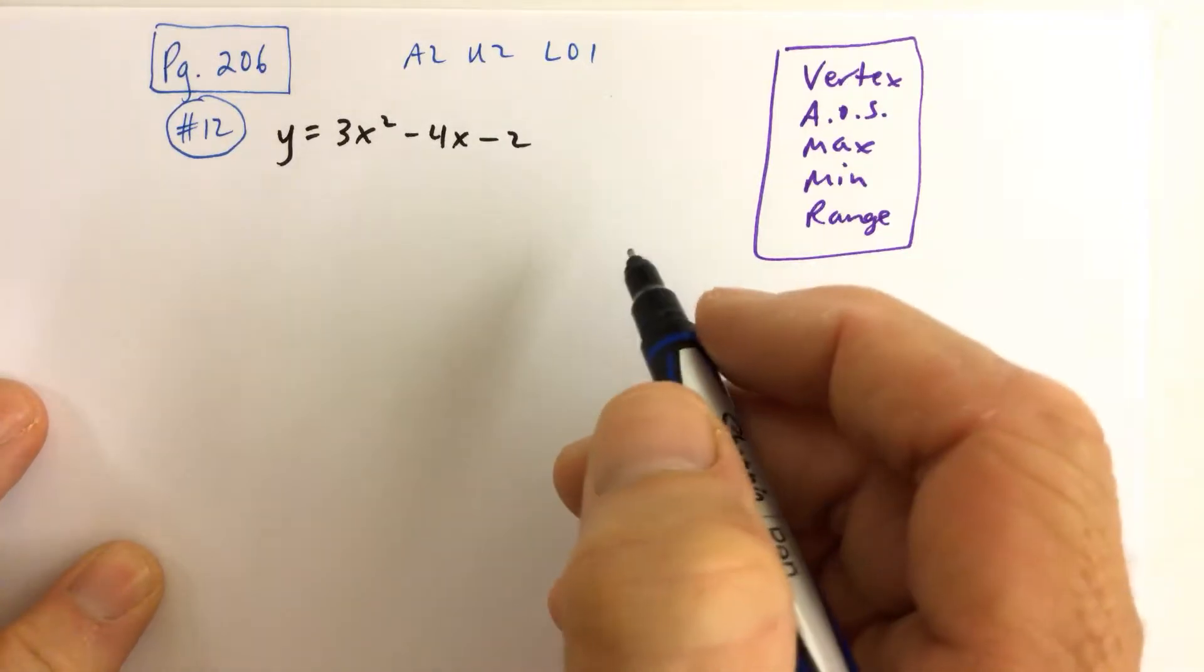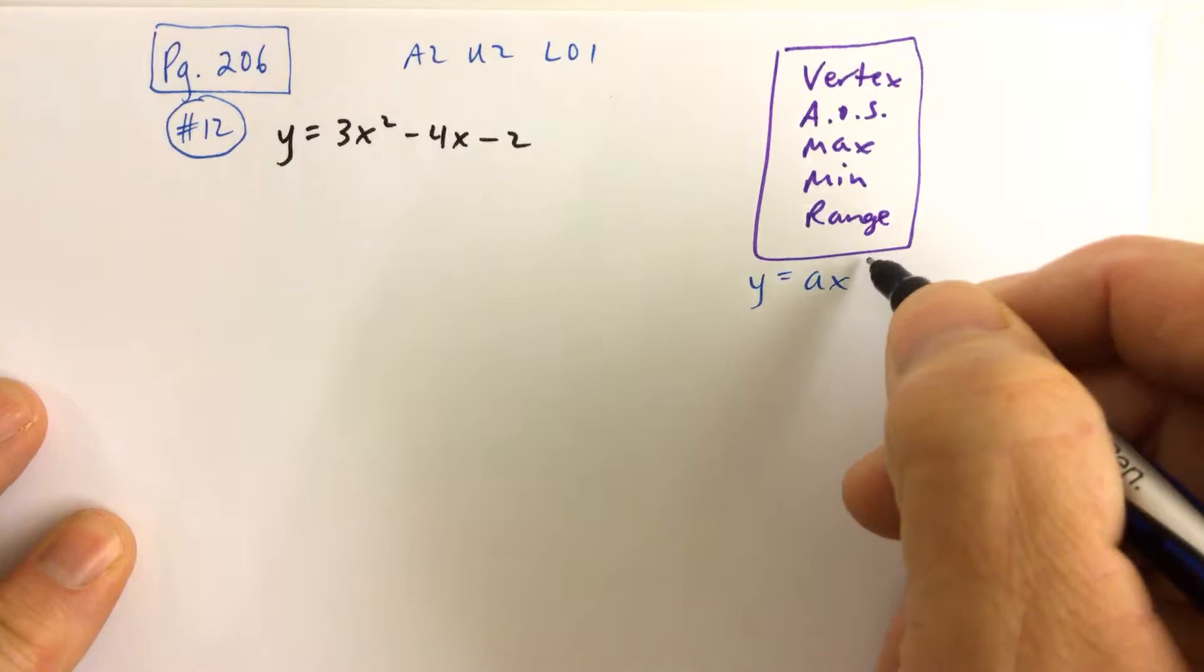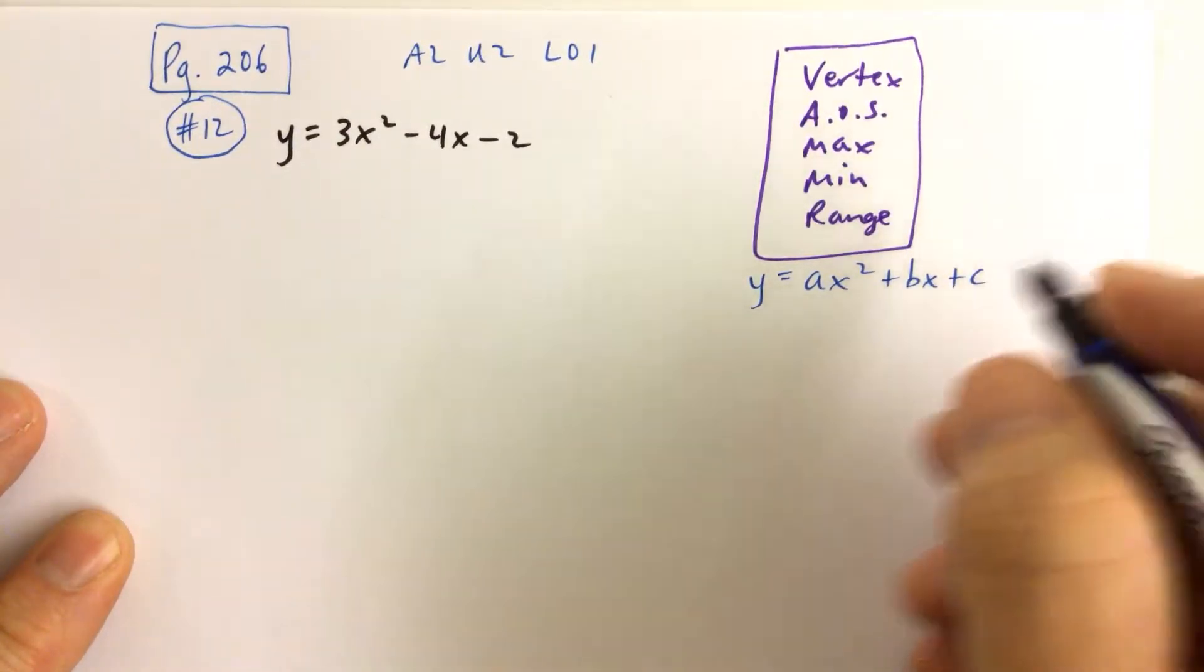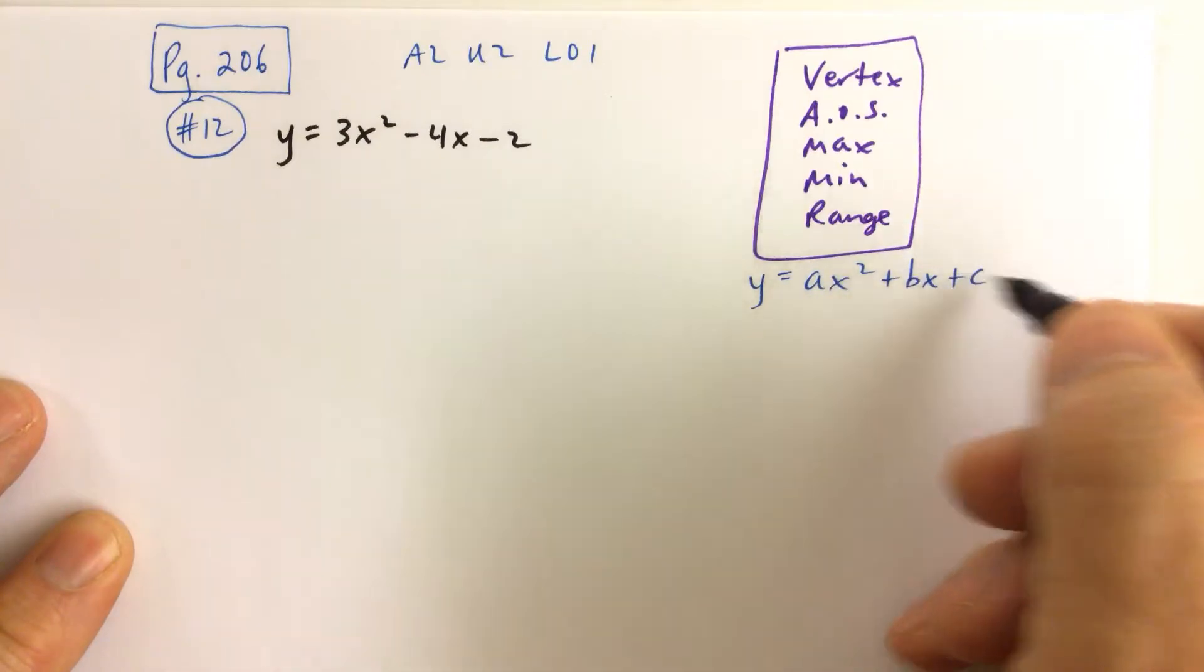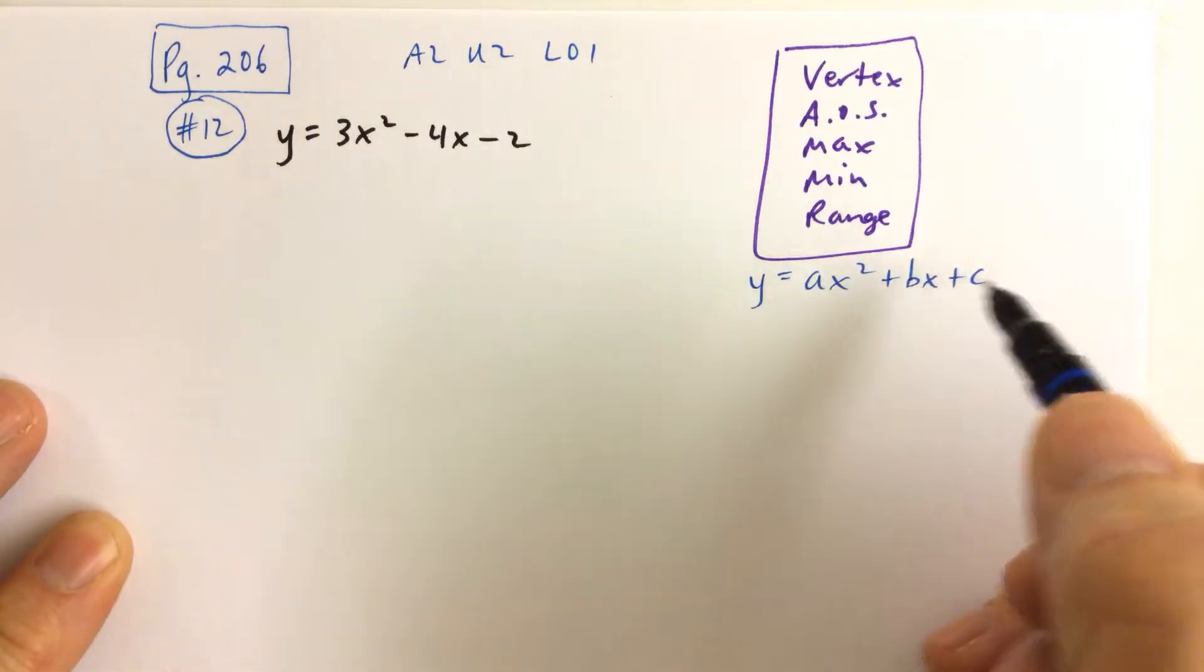We should recognize that the given function is in standard form. Standard form for a quadratic function where the coefficients of the quadratic, linear, and constant are given as a, b, and c.